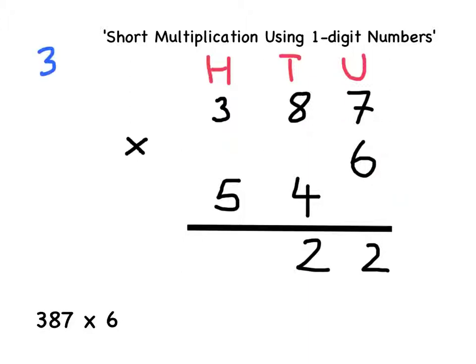I know that 3 multiplied by 6 equals 18. So again, I can use my place value knowledge to work out that 300 multiplied by 6 must equal 1800.